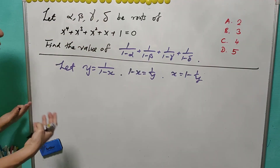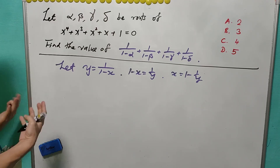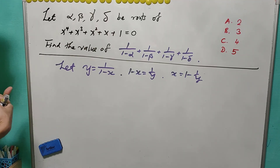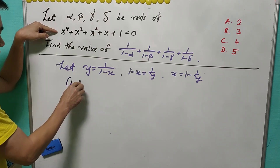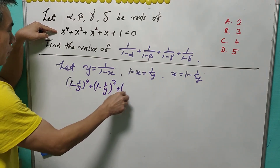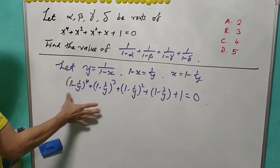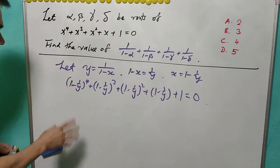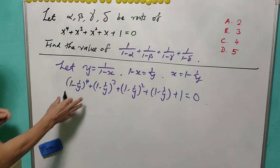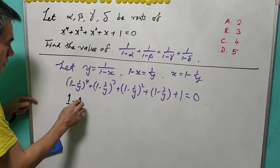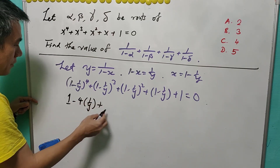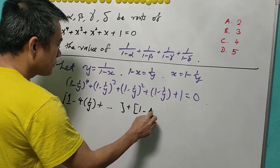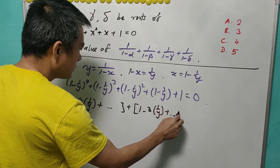This produces a polynomial in y of degree 4 with roots 1/(1−α), 1/(1−β), 1/(1−γ), and 1/(1−δ). Expanding (1 − 1/y)⁴, we look at the constant and the coefficient of 1/y. We get: (1 − 4/y + ...) + (1 − 3/y + ...) + (1 − 2/y + ...) and so on.